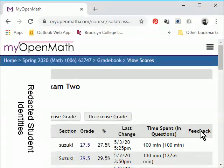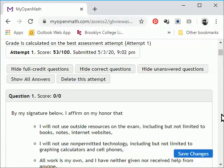If you click on a score, that will pull up all of the student's work on that exam. A useful thing to do here is to hide the full credit questions. That way you only see the questions that need to be graded.